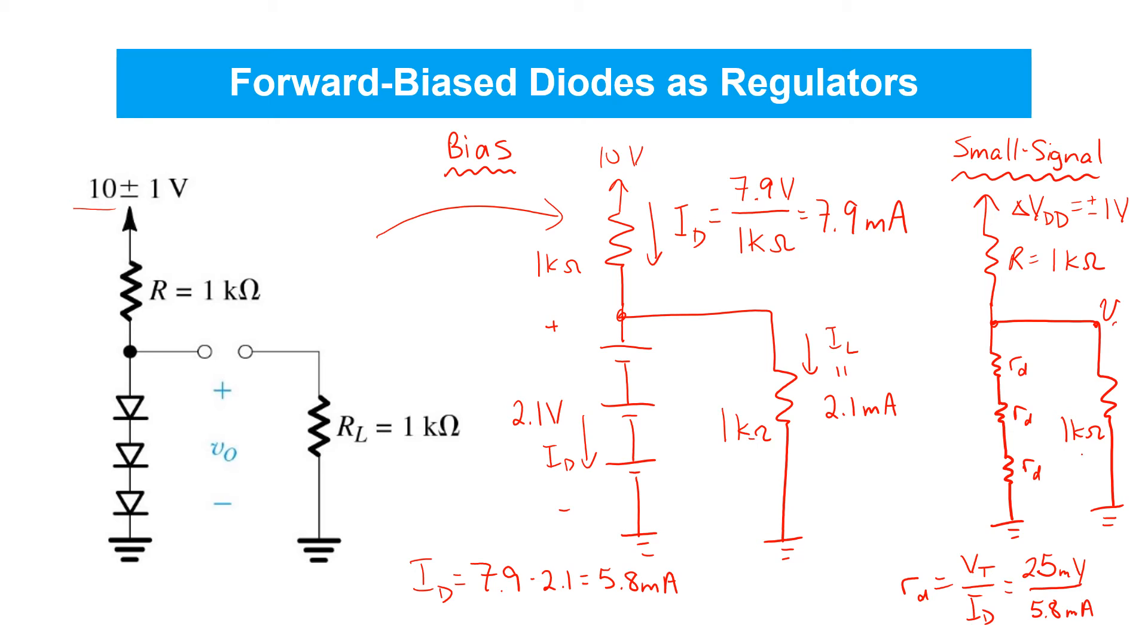We can do a straightforward linear circuit analysis to see how much change in the output voltage here, vo, would result from one volt changes in the supply voltage. So over here, here's our DC quantity, capital V with capital O subscript. On the right, we've got a small signal analysis so we've got all lowercase symbols. And if we wanted to put them together into the complete solution, we could say that Vo here is the superposition of the bias voltage Vo and the small signal lowercase vo.